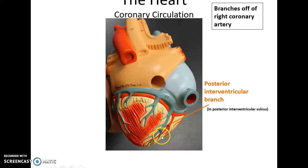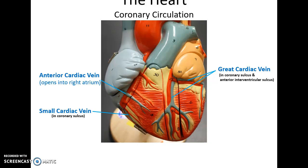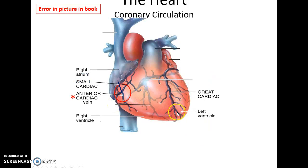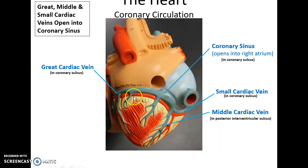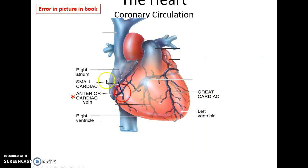These arteries further branch into smaller vessels that connect to the veins. The main veins of coronary circulation carry deoxygenated blood away from the heart. You have the great cardiac vein on the left side, the anterior cardiac vein that empties directly into the right atrium, the small cardiac vein, and the middle cardiac vein. The great, small, and middle cardiac veins empty into the coronary sinus on the posterior side of the heart, which then empties into the right atrium. Note: there is an error in the textbook — a line should show the anterior cardiac vein connecting to the right atrium.